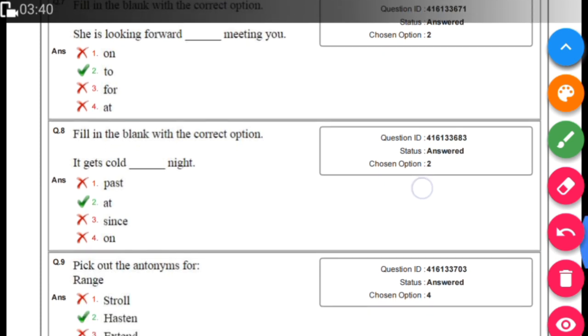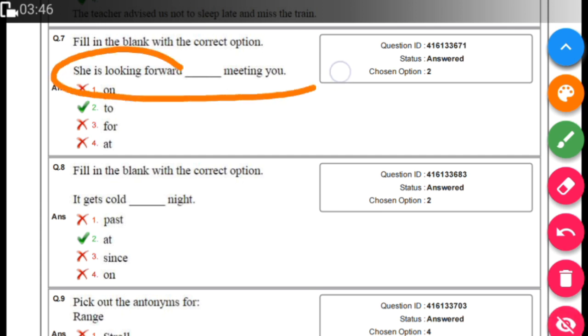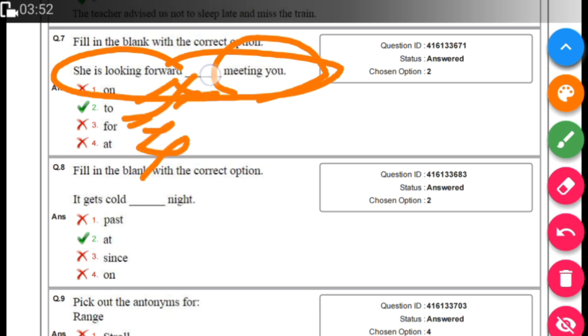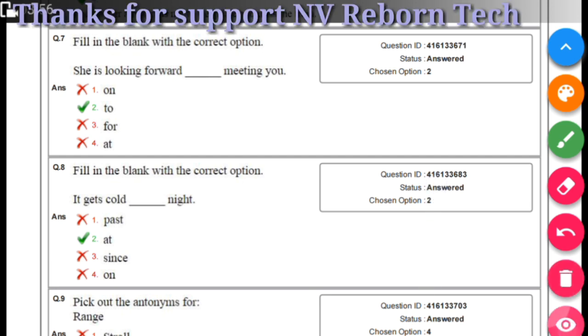The same thing is asked for filling in the blanks based on preposition. The question is: 'She looked forward [blank] meeting you.' The right answer is 'to,' not 'on,' 'for,' or 'at.' The right answer is marked in green and the wrong marks are in red.